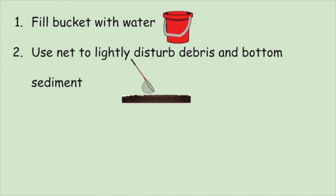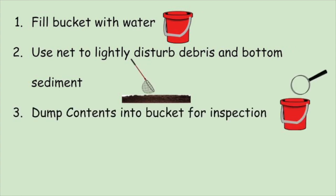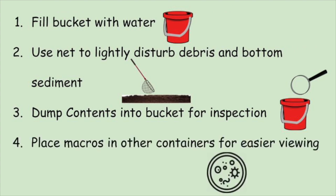Macros are often found around the rocks, vegetation, and logs or sticks, and they like to burrow in the bottom sediment, so make sure to check in these areas. Dump all of the contents of your net into the bucket for inspection. Once you've collected some macros, it's helpful to view them in a smaller container such as a petri dish or glass or cup. You can use a magnifying glass or just your eyes to observe the different macros you've collected. Once you've spent some time observing and identifying the macros, don't forget to return them to their home.